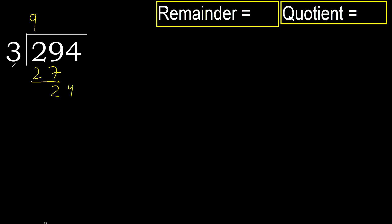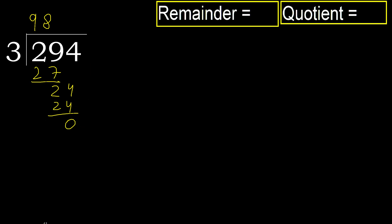24. 3 multiplied by 9 is greater, so multiplied by 8. 24 is not greater. Ok. Subtract, 0. Next, that is not a number, therefore finish.